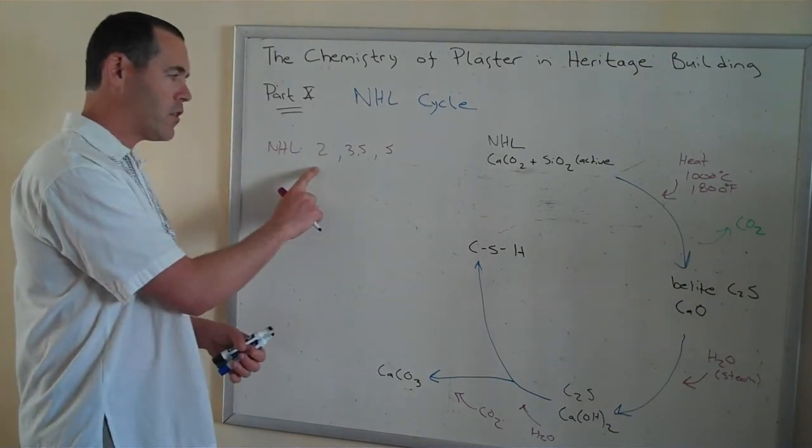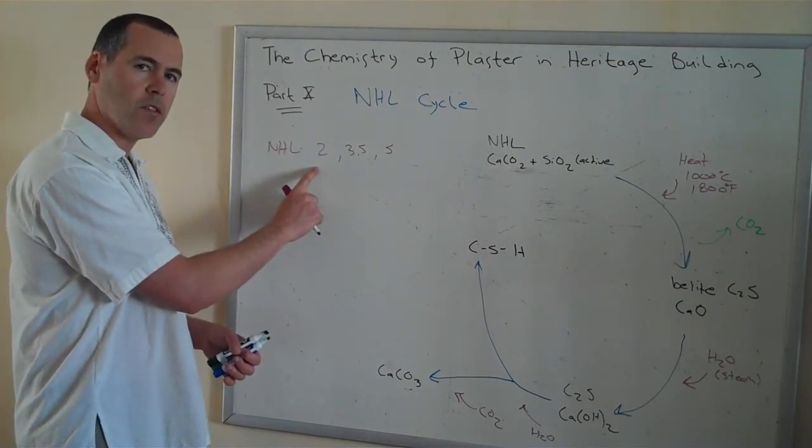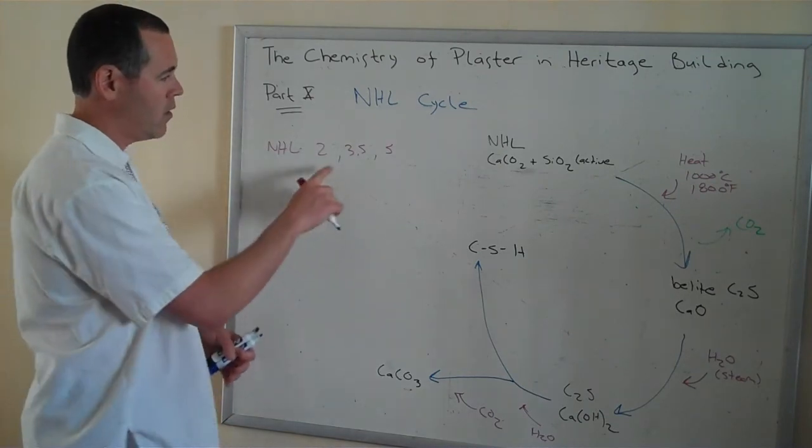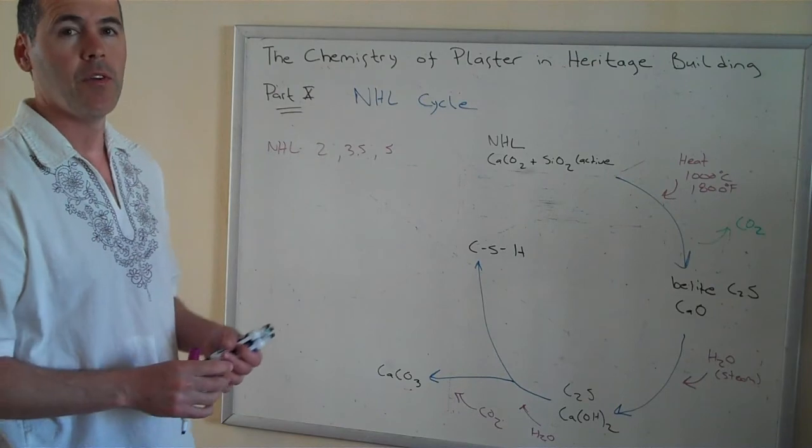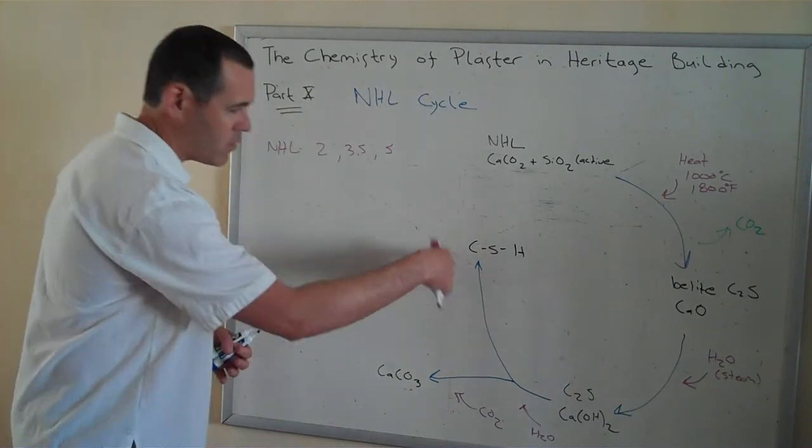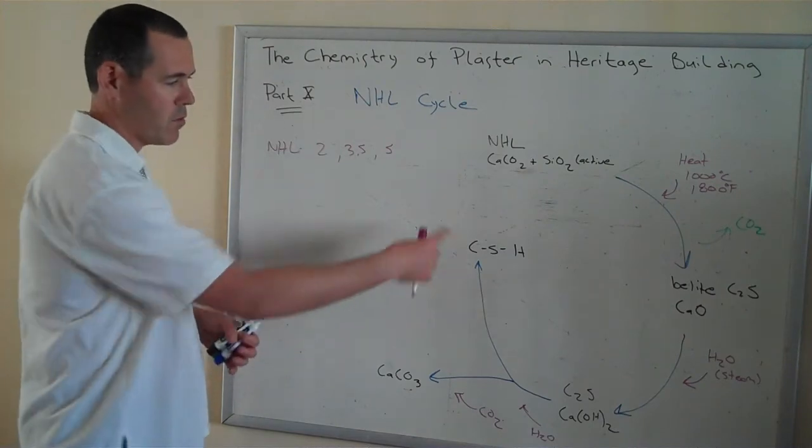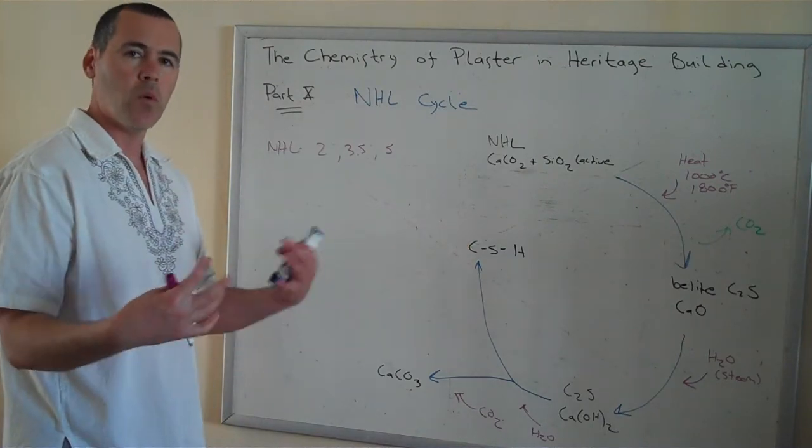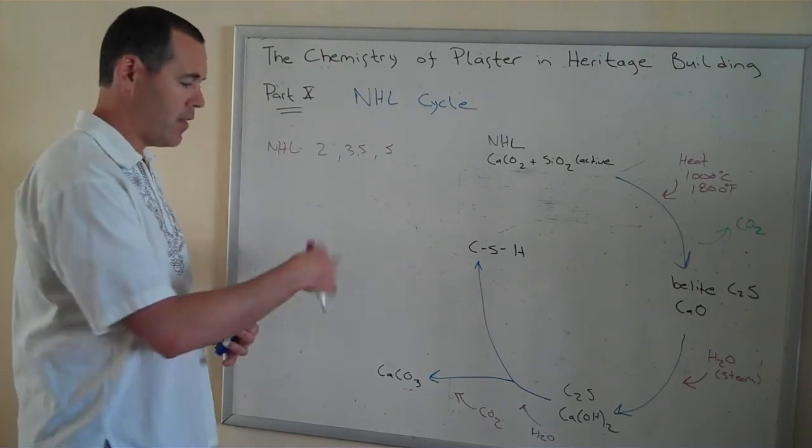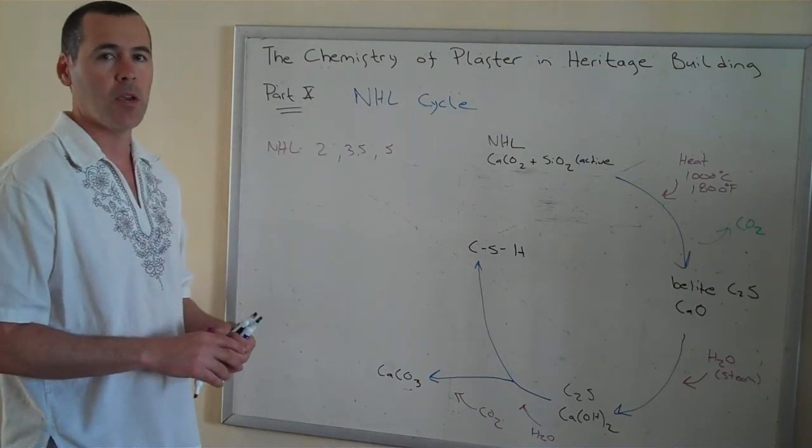So an NHL 2 of lesser compressive strength generally is less hydraulic than a stronger NHL, say a 5 that has a much higher compressive strength. In other words, that higher compressive strength is coming from these reactions, which means more and more of the calcium is tied up in these cementitious gels, and less is available for the carbonate reaction.